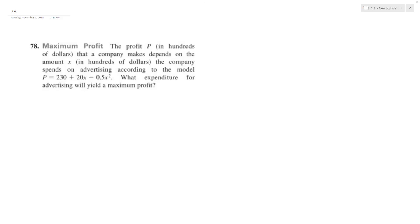All right, so we want to find the maximum profit P in hundreds of dollars that a company makes, which depends on the amount X in hundreds of dollars the company spends on advertising according to the model P = 230 + 20X - 0.5X².